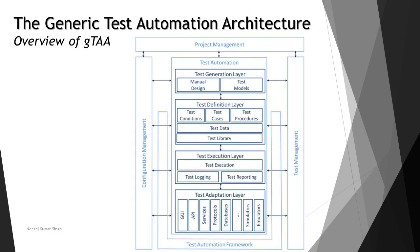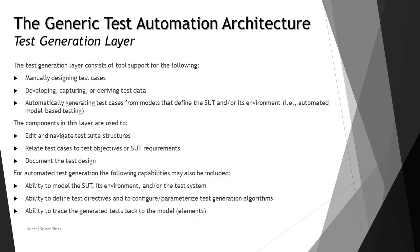In the previous tutorials we understood about the architecture and saw the overall summary of what exactly the activities and the architecture generally include. In this tutorial we are going to understand in detail the activities performed as part of different layers, putting them together as a group to understand what happens in each layer of the test automation architecture.